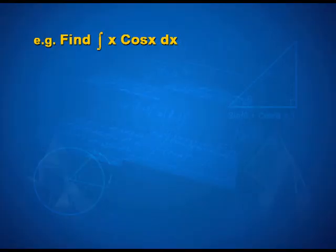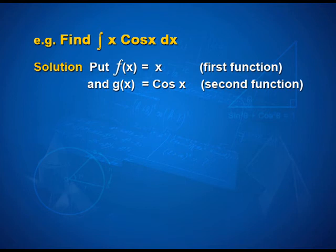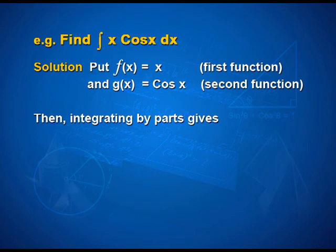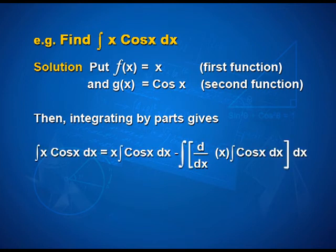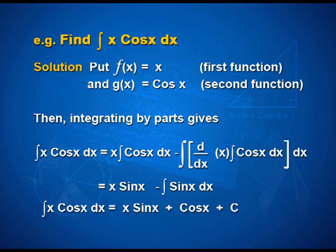Now let us solve some problems using this method. Find integral x cos x dx. Put f(x) = x as the first function and g(x) = cos x as the second function. Then integrating by parts, ∫x cos x dx = x·∫cos x dx - ∫[d/dx(x)·∫cos x dx] dx = x sin x - ∫sin x dx. Therefore, ∫x cos x dx = x sin x + cos x + C.